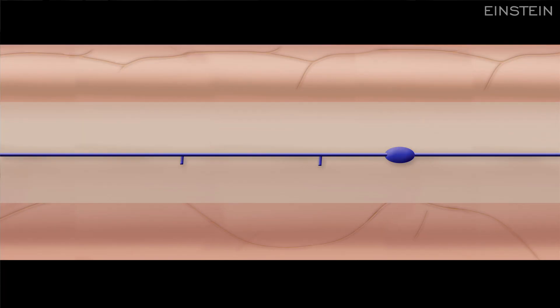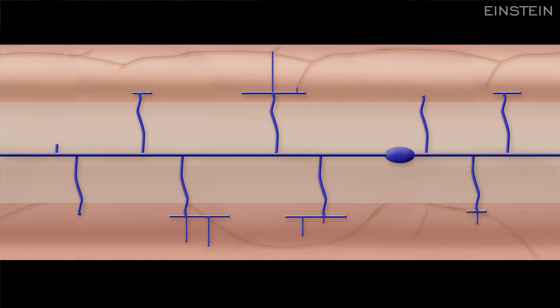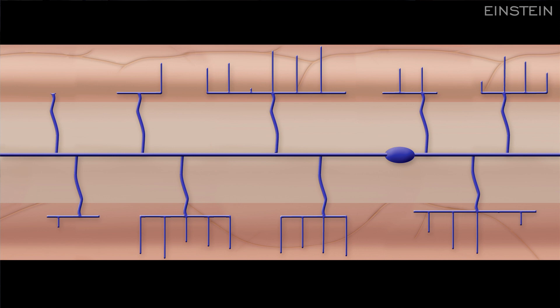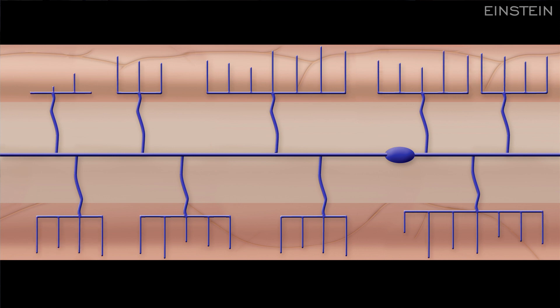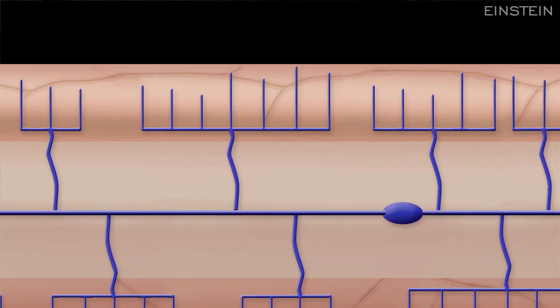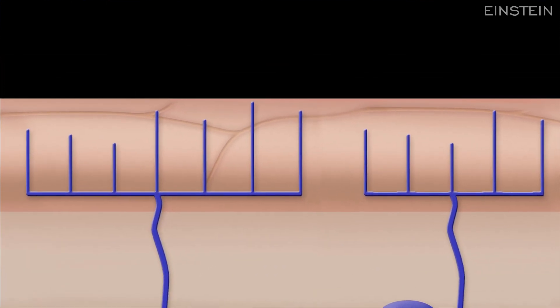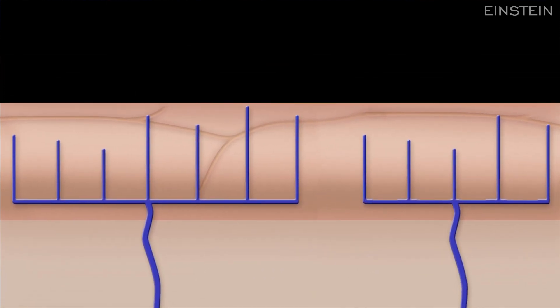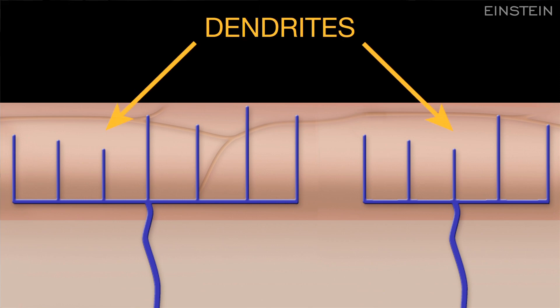All organisms, including humans, have to sense their environment — sensing touch and pain, for example. This is accomplished by very specialized nerve cells in the skin. Characteristic for these nerve cells is that they form specialized endings that look like little trees, called dendrites.